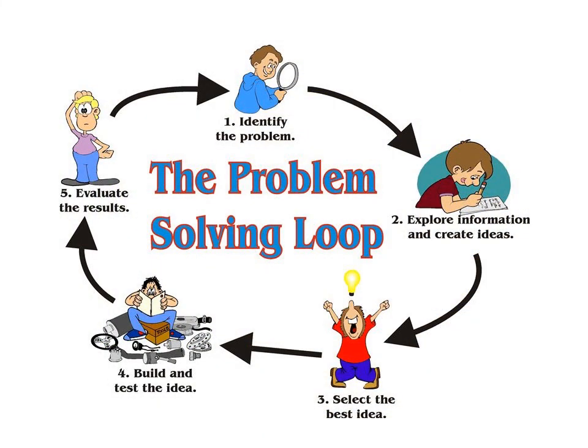The problem-solving loop: first, identify a problem — obviously, if the problem exists, then you start critical thinking. Then explore information and create ideas, because every problem has some information about why it exists and what you want to achieve. Next, select the best idea from your list, then build and test the idea, and finally evaluate the results — is this idea applicable or not? The idea should be viable and applicable.